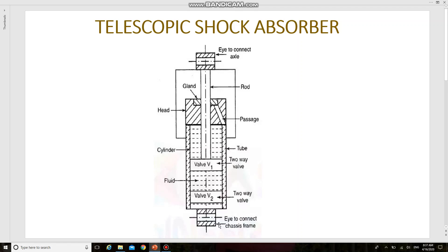And the lower end is attached to the chassis frame. A two-way valve v1 is connected to the rod. Another two-way valve v2 is connected to the lower end of the cylinder. The fluid occupies the space above and below the valve v1 and also the annular space between the cylinder and the tube.